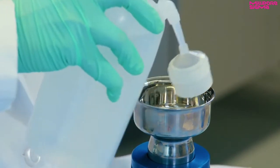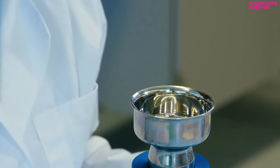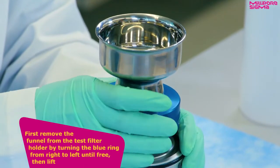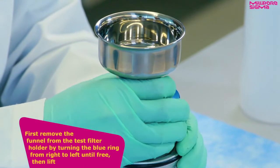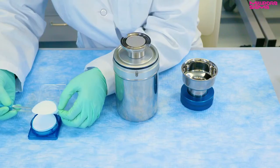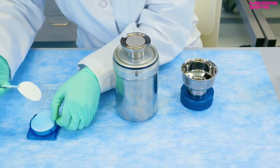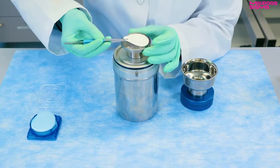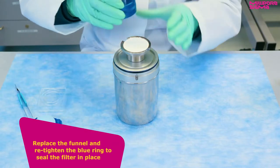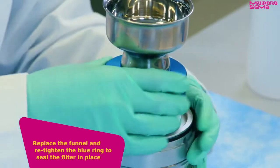To install the test filter, first remove the funnel from the test filter holder by turning the blue ring from right to left until it's free and then lift. With your forceps, center a 47 millimeter white test filter disc on the wire mesh support screen. Replace the funnel and re-tighten the blue ring to seal the filter in place.